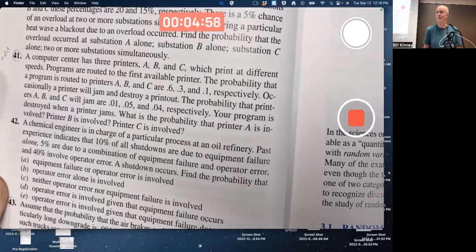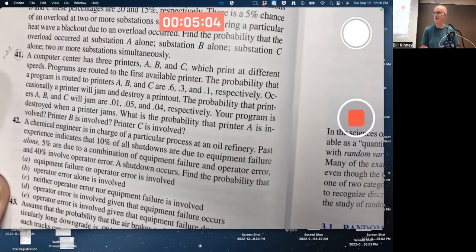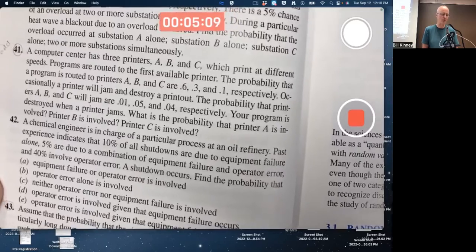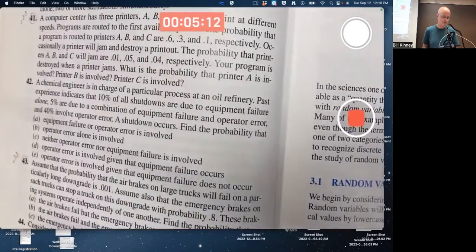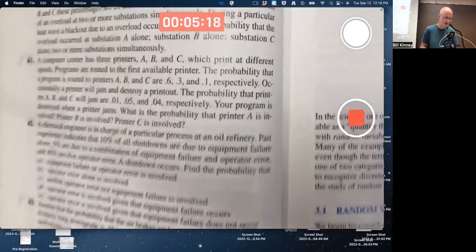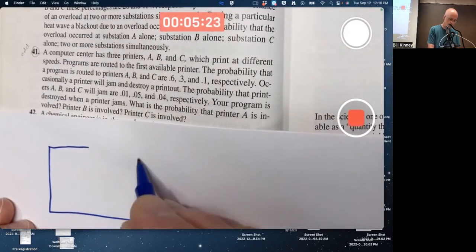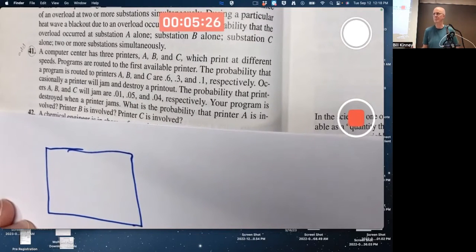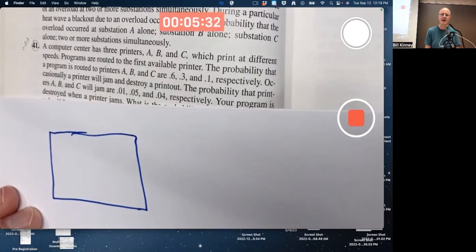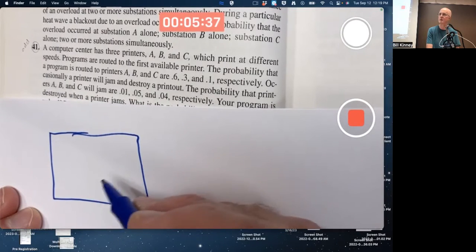It's not clear from this problem statement that this is about conditional probabilities, right? You don't see the word conditional anywhere. You have to realize that from the context, from the way the problem is phrased, from the problem solving process. What kind of problem solving process am I talking about? It certainly wouldn't hurt to draw a Venn diagram here. You're sending the job to one of these three printers. One of these three printers is going to get the job, A, B, or C.